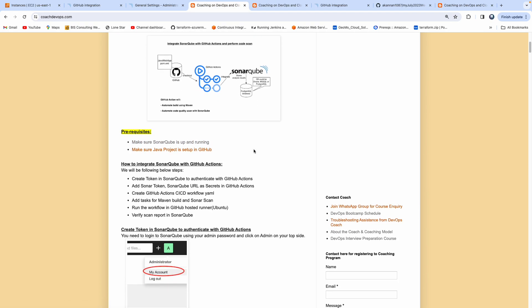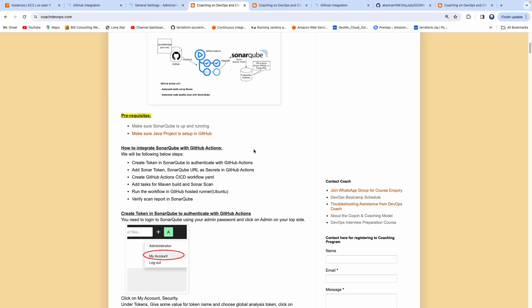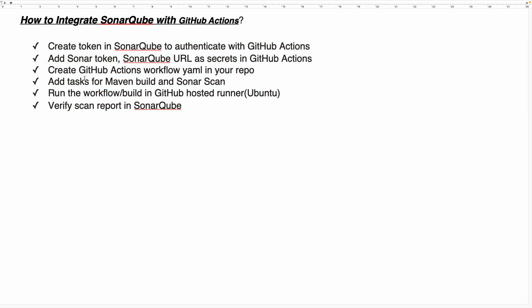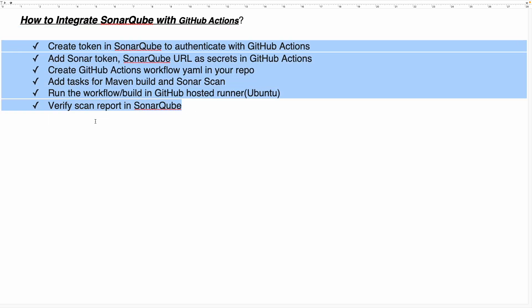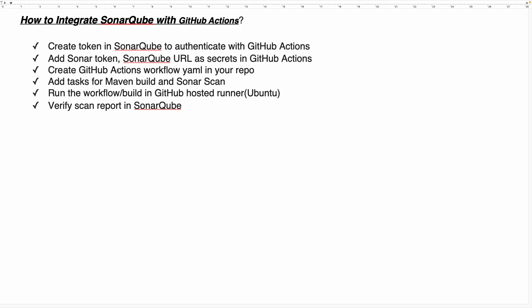We have all the prerequisites met, so let's get started. The implementation steps are: first, create a token in SonarQube so that GitHub can authenticate with SonarQube. Once the token is created, add it as a secret in GitHub Actions. We'll also add the SonarQube URL as a secret. Then we'll create a GitHub Actions workflow YAML file and customize it by adding tasks for Maven build and Sonar scan. Finally, we'll run the workflow and verify the scan report in SonarQube. It's pretty straightforward — create a token, add it as a secret, create and customize the workflow, run it, and you're done.